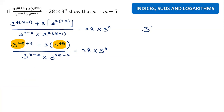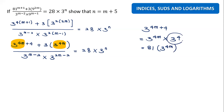Let me explain: 3 to the power 4m+4 — the plus 4 actually comes from times 3 to the power 4. And 3 to the power 4 is 81. So I can write this as 81 times 3 to the power 4m, plus 3 to the power 4m. Now both terms have 3 to the power 4m as a common factor, so I can factorize.